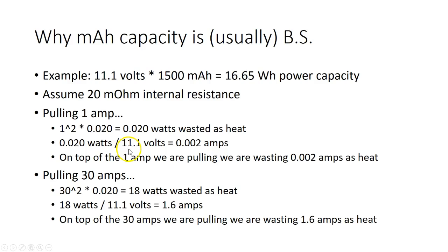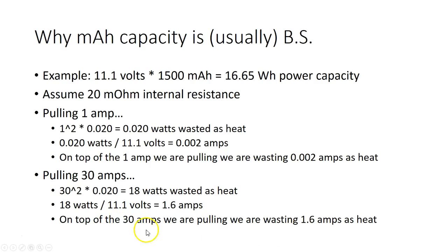That's assuming a constant 11.1 volts, which in reality will not be the case, but we're just working an example here. On the other hand, if we were pulling 30 amps, we run that math again and we see 18 watts is being wasted as heat — that is way more. And if we divide 18 watts by 11.1 volts, we get the equivalent of 1.6 amps. So on top of the 30 amps we're pulling, we're wasting 1.6 amps as heat. Basically, the more current you're pulling, the more amps you waste as heat.